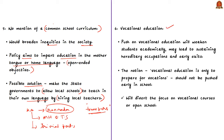The next concern is about vocational education. The concern is that the push on vocational education will weaken students academically and may lead to sustaining hereditary occupations and early exits or dropouts. The authors feel that the notion of vocational education is only to prepare for vocations and should not be pushed early in schools, as this will lead to a lot of dropping out and divert focus only on vocational courses, since the ultimate objective will be a job and not education.